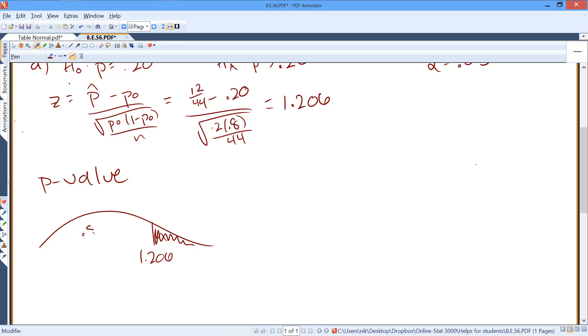So if I did one minus that, you get 0.1131. So my p-value is 0.1131.